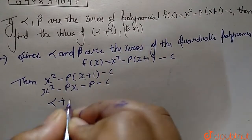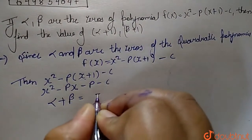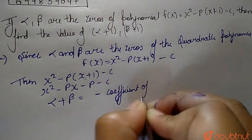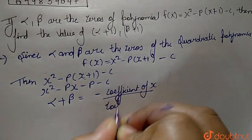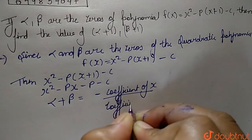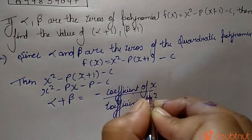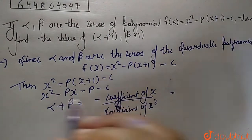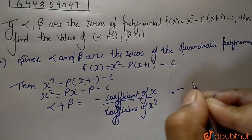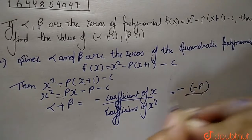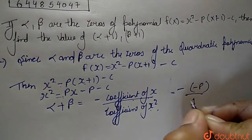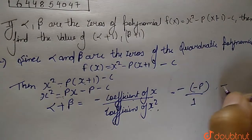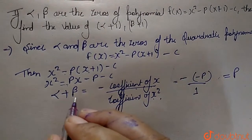The value of alpha plus beta equals minus of coefficient of x upon coefficient of x². The coefficient of x is minus p, so we get minus times minus p over 1. Thus alpha plus beta equals p.